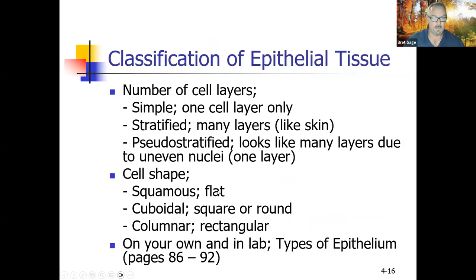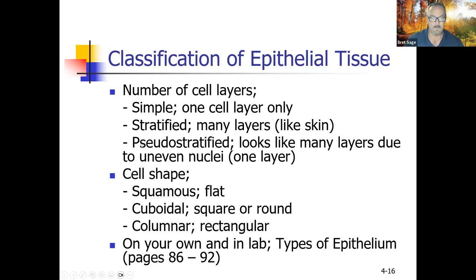Classifications of epithelial tissues: simple means one cell layer, stratified means many layers. Skin, for example, is stratified squamous epithelium — it's more cuboidal at the base and more squamous at the surface, but because the uppermost layers are squamous it's called stratified squamous. Pseudo-stratified means falsely stratified: it has one basement membrane and one apical surface, but because the nuclei are staggered, it looks like different layers — it's called falsely stratified.